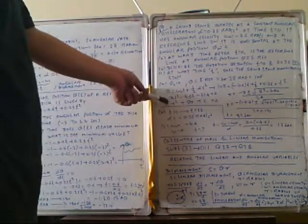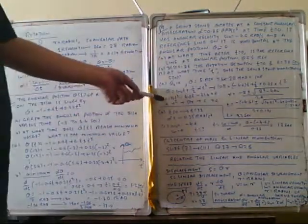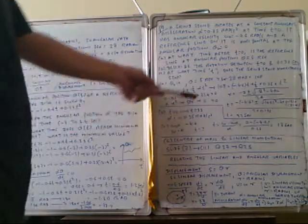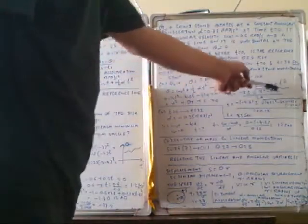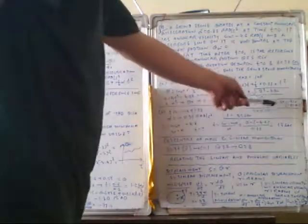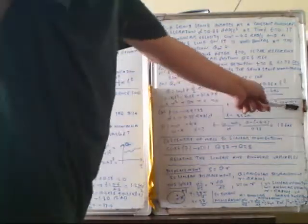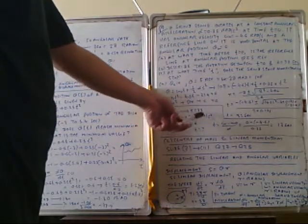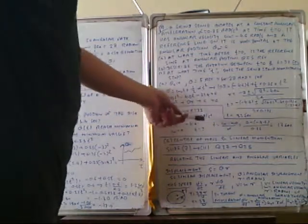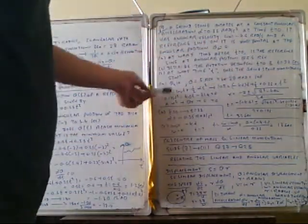This gives us 0.175 t squared minus 4.6 t minus 31.4 equals zero. Comparing with the quadratic formula a t squared plus b t plus c equals zero, we substitute a equals 0.175, b equals minus 4.6, and c equals minus 31.4. Solving gives t equals 32 seconds. So from t equals zero, the root is 32 seconds, with alpha equals minus 0.35 radian per second squared.